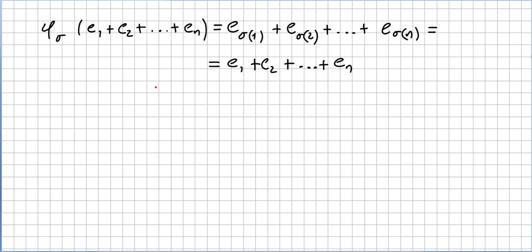Let me give you a quick last note that will introduce my next video. You can see that φ of σ(E1 + E2 + ... + En) equals E of σ(1) + E of σ(2) + ... + E of σ(n). But this is equal to E1 + E2 + ... + En.